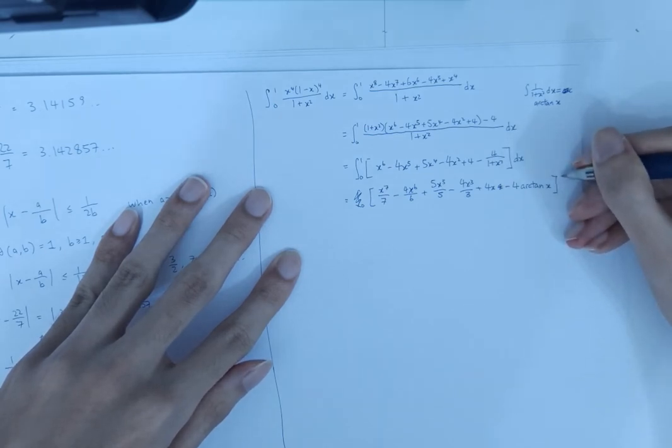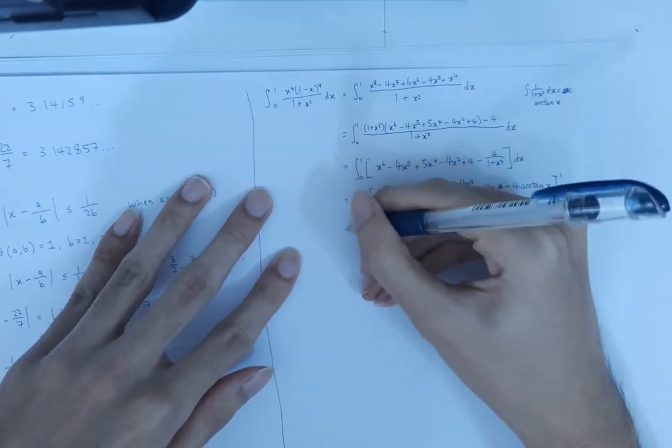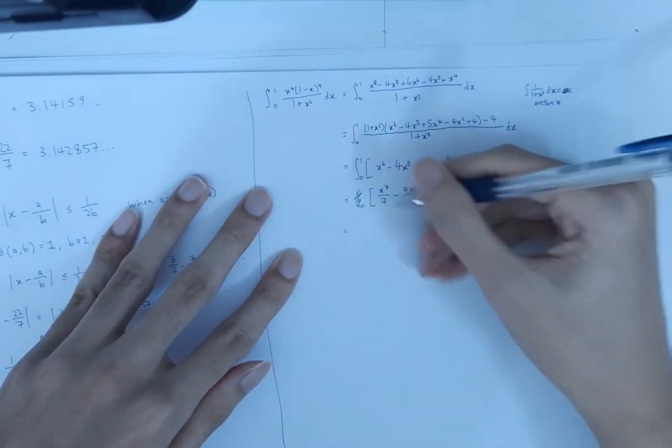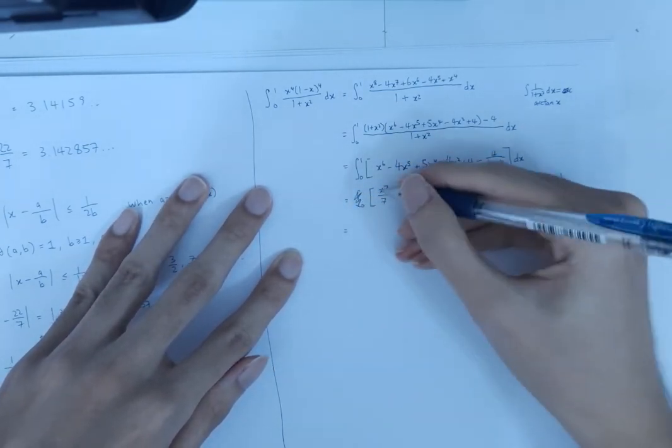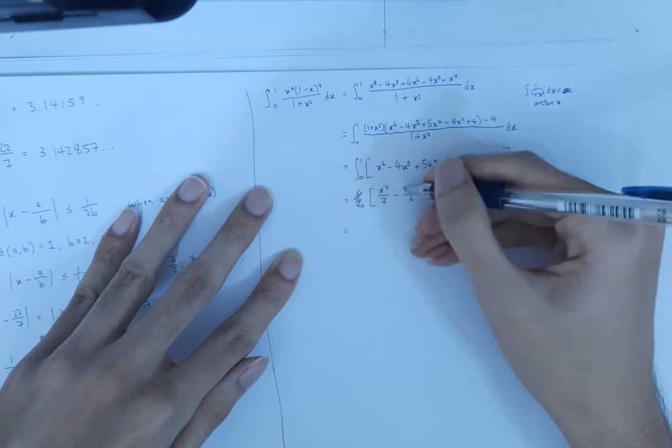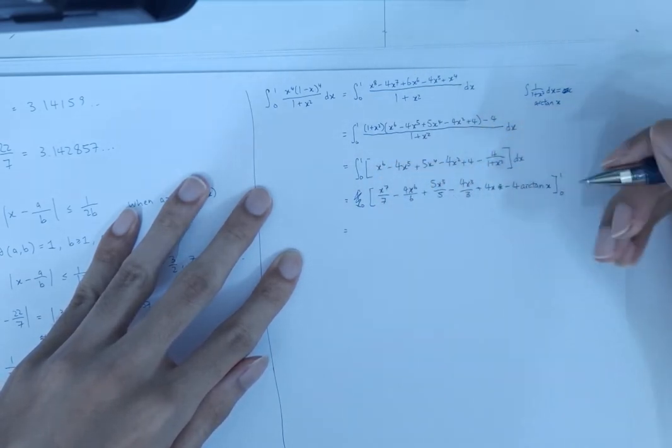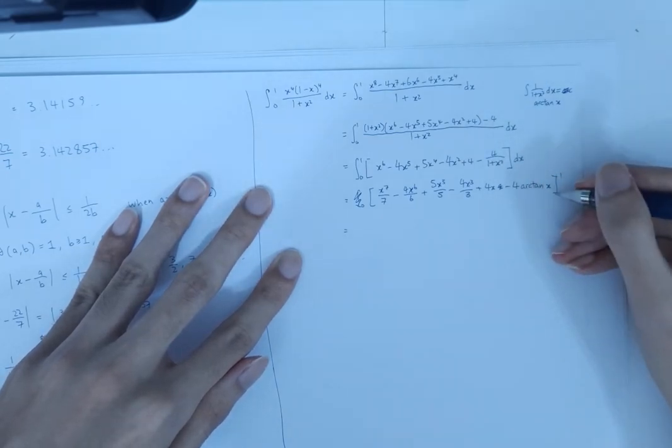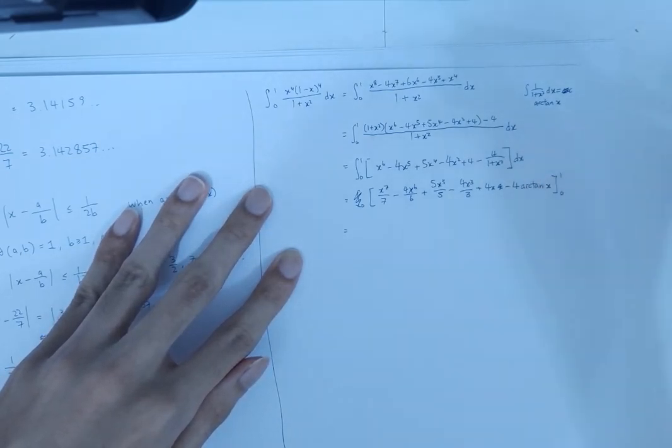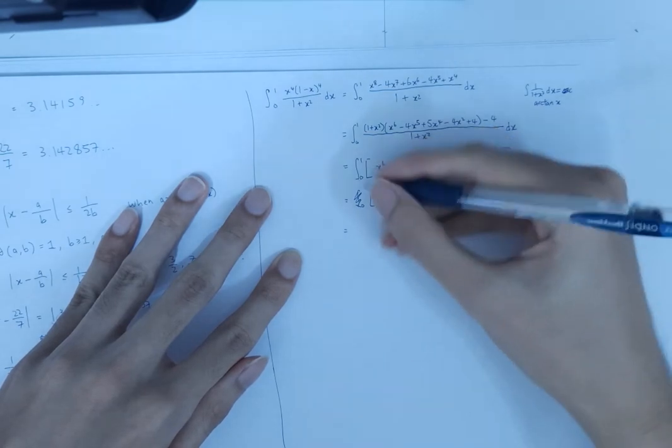So this thing is minus 4 times the arctangent of x. And the integration limits are 0 and 1. Then we just plug in. If we plug in 0 then all of these terms become 0, 0 power anything is 0, so all of these first 5 terms become 0, and arctangent of 0 is still 0, so this also becomes 0. So we only need to care about what happens when x goes to 1.